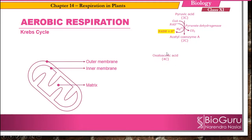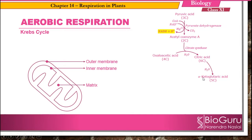In the Krebs cycle, there is an intermediate called oxaloacetic acid, which is a four-carbon compound. It joins with acetyl coenzyme A to produce a stable compound — citric acid — which is a six-carbon compound. This reaction is catalyzed by the enzyme citrate synthase by the addition of a water molecule. Further, citric acid gets converted into alpha-ketoglutaric acid, which is a five-carbon compound, also by the addition of one molecule of water.